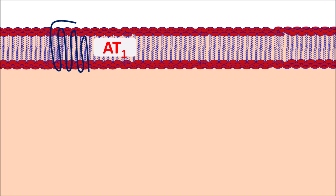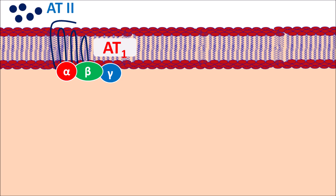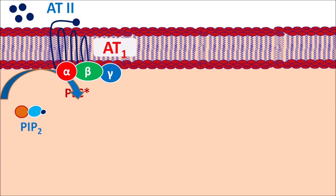These AT1 receptors are G protein-coupled receptors coupled with alpha, beta, and gamma subunits. When angiotensin 2 binds to these receptors, they are activated and stimulate the phospholipase C system. Phospholipase C is a cleavage enzyme that can convert phosphatidylinositol bisphosphate into two components: IP3 and DAG (diacylglycerol).